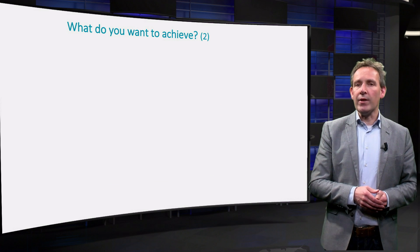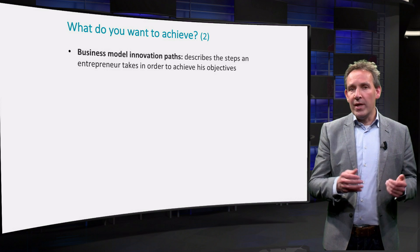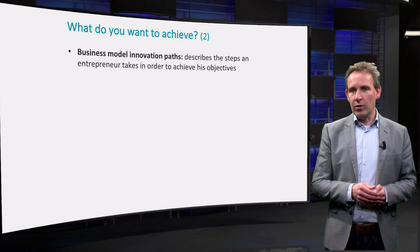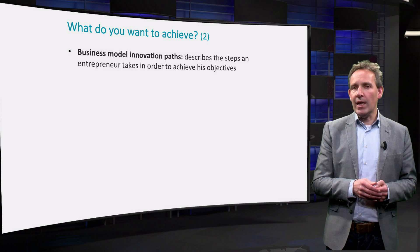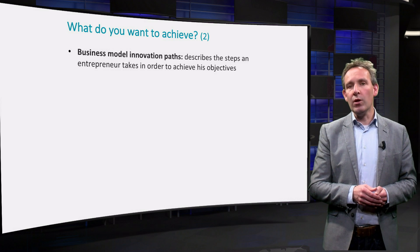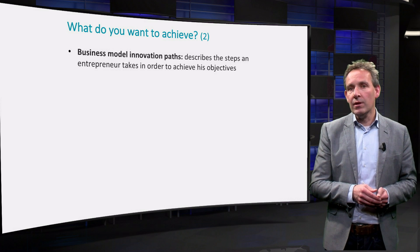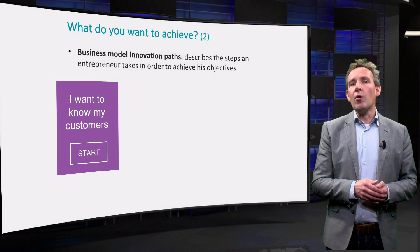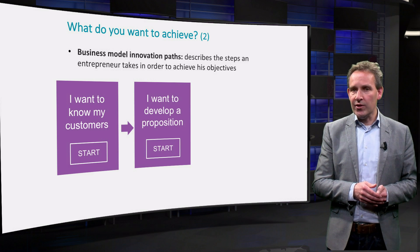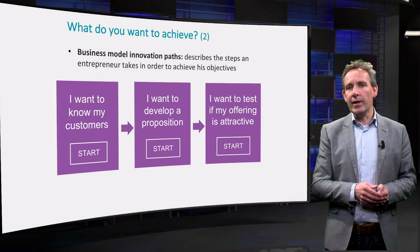The second concept is about how to achieve such 'I want to's. We call these a business model innovation path, or business model path in short. It is a sequence of steps that an entrepreneur can take in order to achieve what he or she wants. The steps are 'I want to's in themselves, like: I want to know my customers, or I want to develop a viable proposition, or I want to test the attractiveness of my offering.